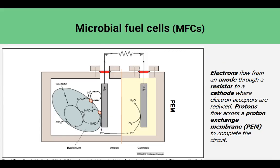In a microbial fuel cell, electrons flow from an anode through a resistor to a cathode where electron acceptors are reduced. Protons flow across a proton exchange membrane to recharge this battery. So a microbial fuel cell in which biomass fuels are directly converted into electrical energy through an oxidation-reduction reaction is a promising technology — essentially you're creating a living battery to produce the electricity.